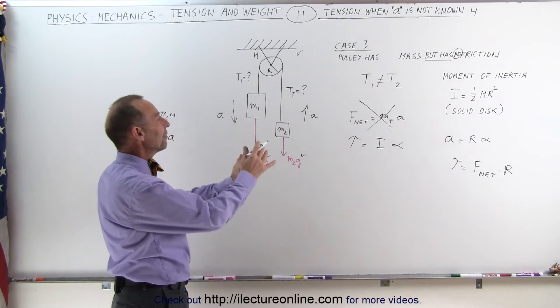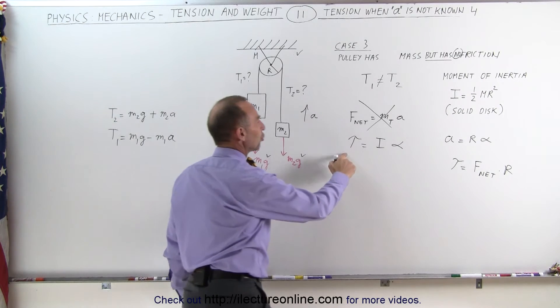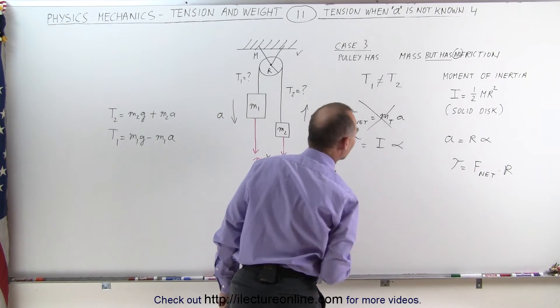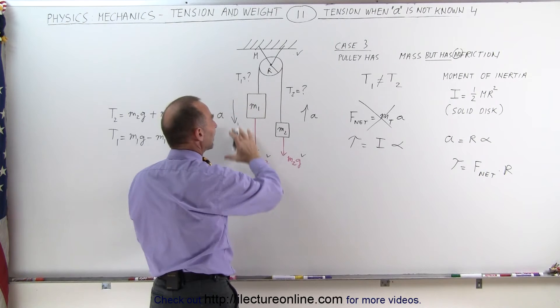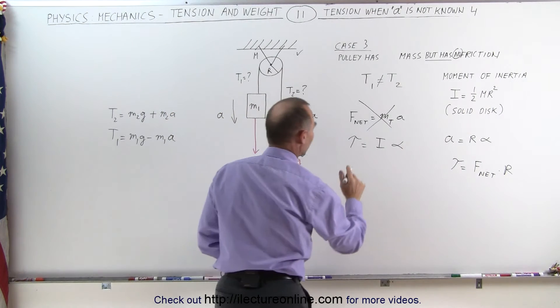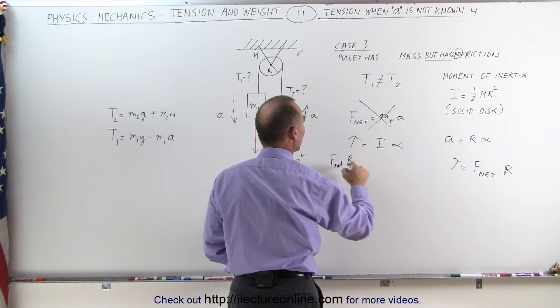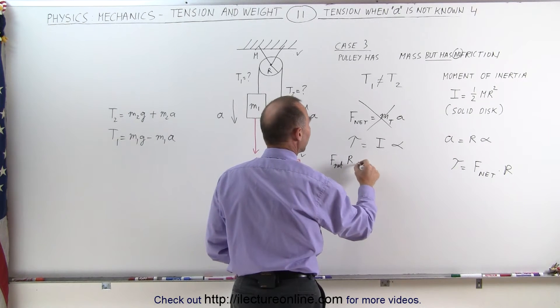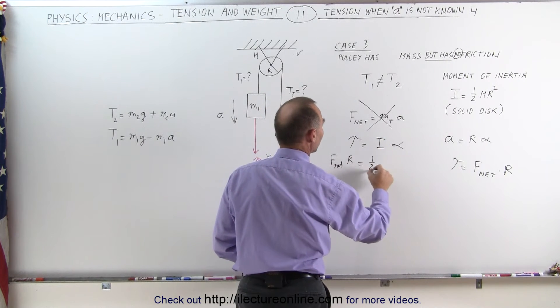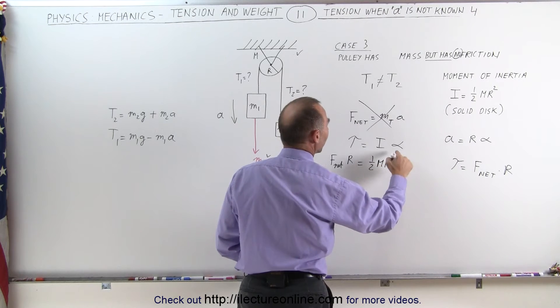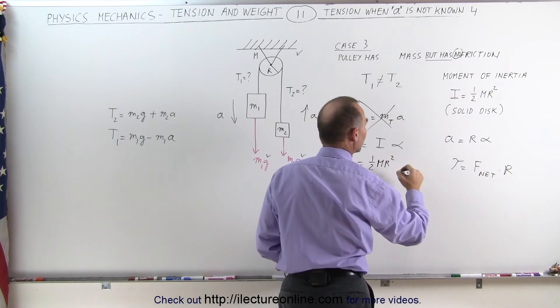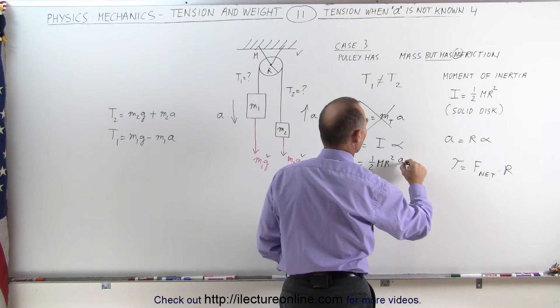Now, how do we find that equation? Well the torque will be the net force times the radius and the net force will be the net force caused by the difference of these two forces. So here we can say it's F net times the radius of the pulley equals the moment of inertia of the pulley which is one-half MR squared times the angular acceleration which is A divided by R.